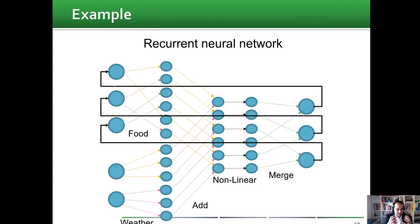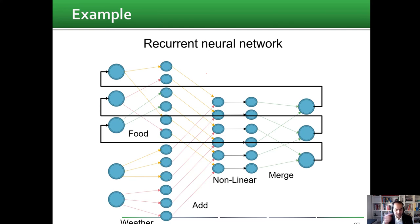In a short sentence, we can represent a recurrent neural network as a model that can be used when we need memory. For any decision that requires memory, we go for a recurrent neural network. In other words, if we have temporal data or a sequence of data — for example, video, time-lapse photos, or text — these can be considered as sequences of data.